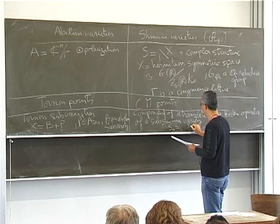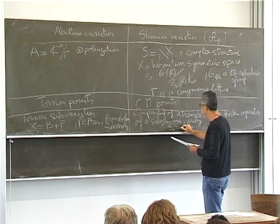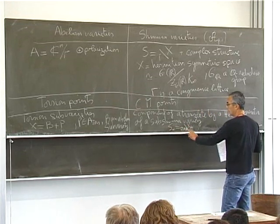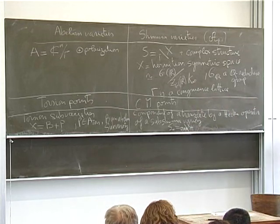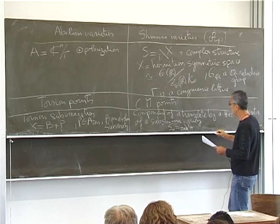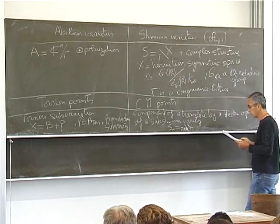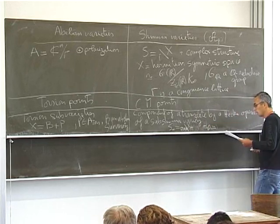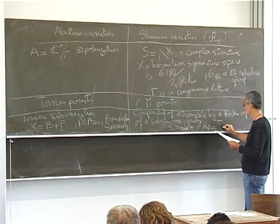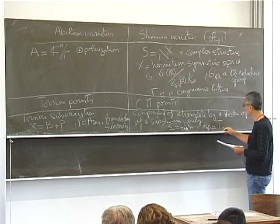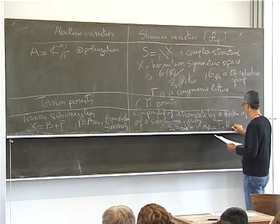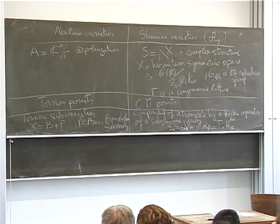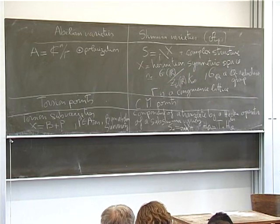On the Shimura side, a special sub-variety is a component of a translate by a Hecke operator of a sub-Shimura variety. A sub-Shimura variety SH has the form X_H divided by the intersection of gamma with the group of real points of H, where H_Q is a reductive group — say an almost direct product of a torus by the derived group of H_Q. Here, almost direct product means the intersection of T with H_Q^der is finite.